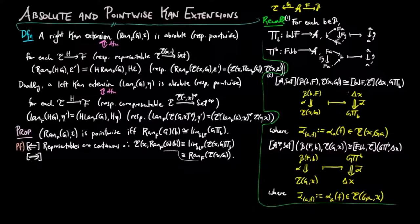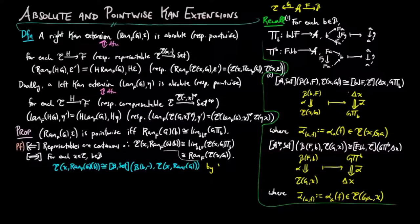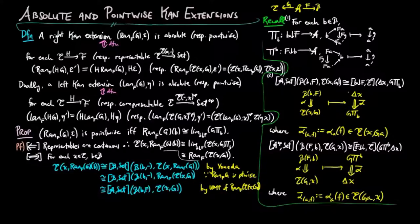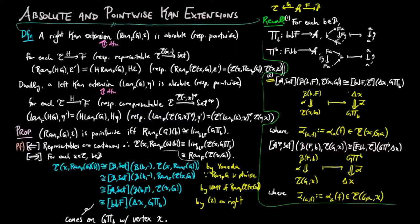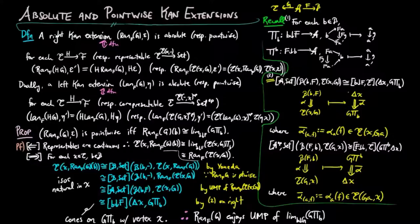For the forward direction, for each x in E and b in category B, the set E(x, Ran(f,g)(b)) is isomorphic to the functor category of natural transformations from the representable on object b to E(x, Ran(f,g)(−)) by Yoneda. But the right Kan extension of g along f is assumed to be point-wise, and thus this set is isomorphic to the functor category of natural transformations from the representable on b to the right Kan extension of E(x, g−) along f. Then by the universal mapping property, we have the following isomorphism. By point 2 above, this is the same as the set of cones on g∘π_b with vertex x. Since each isomorphism is natural in x, by the Yoneda embedding, Ran(f,g) enjoys the universal mapping property of the limit of g∘π_b, which completes the proof.